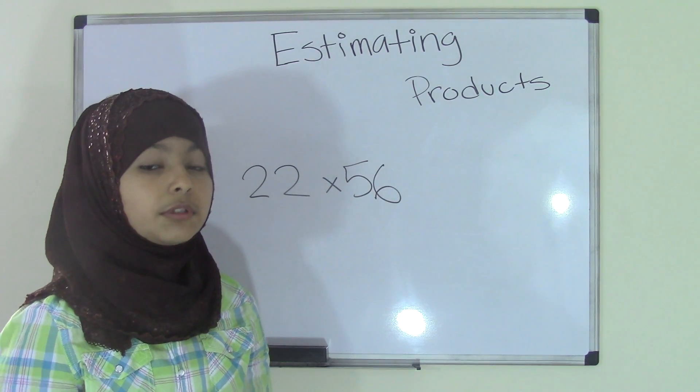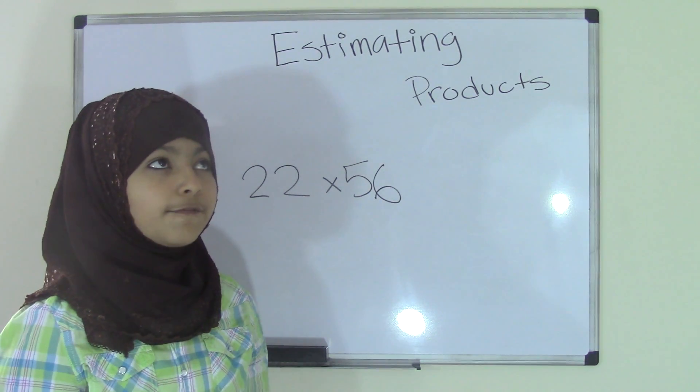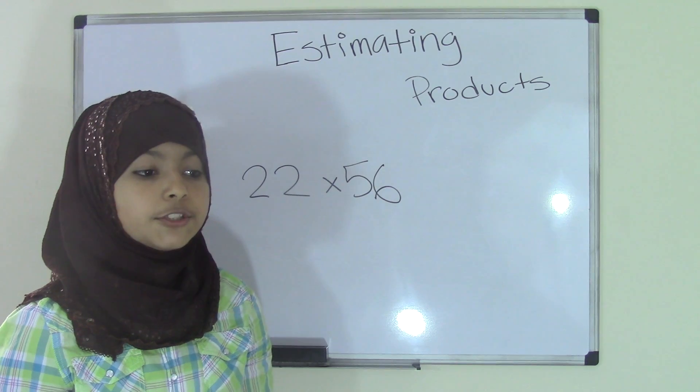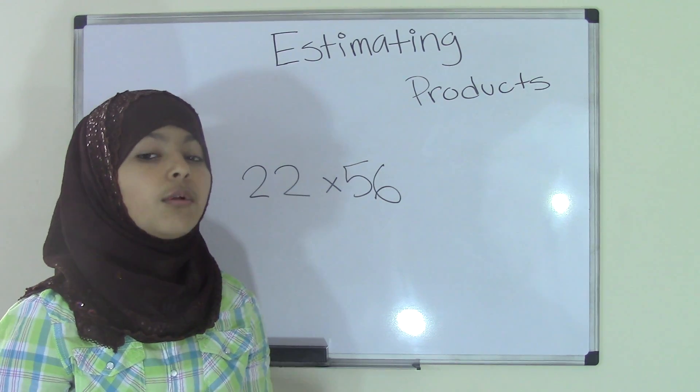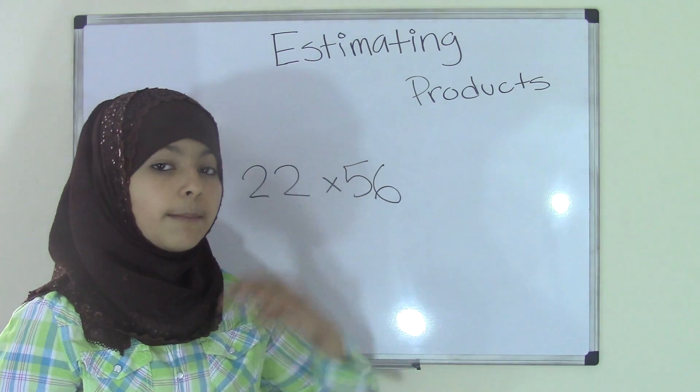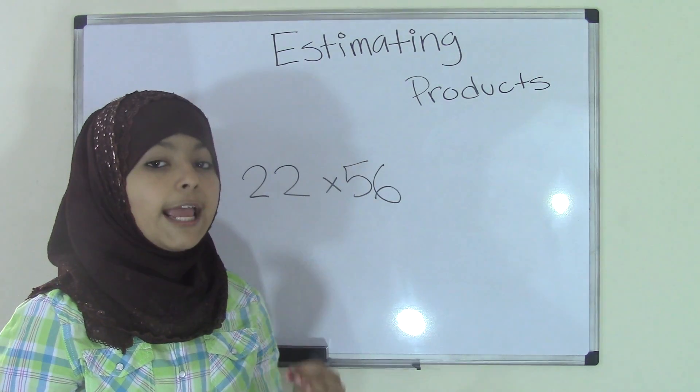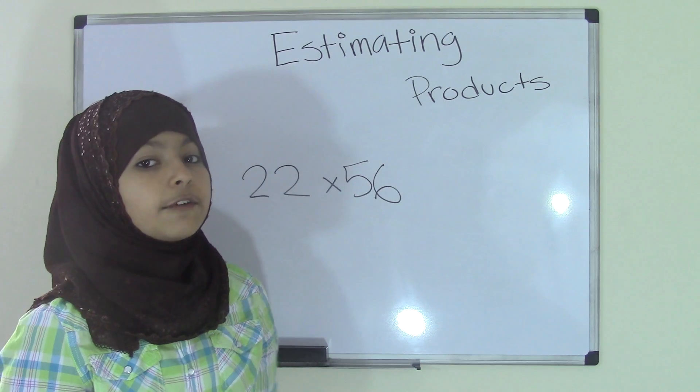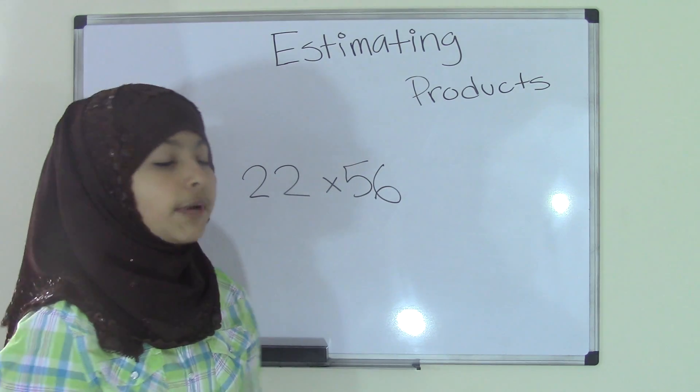if any number is below 5, 50, or 500, you will always round down. If it's above, then you always round up.